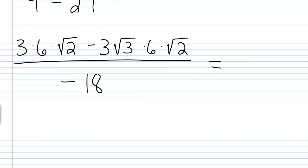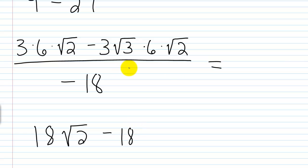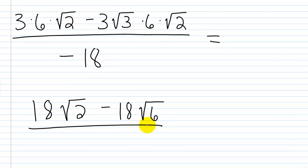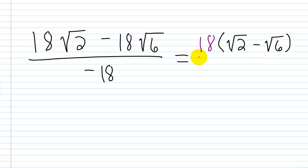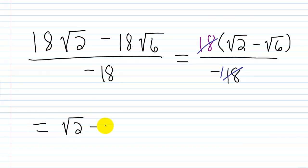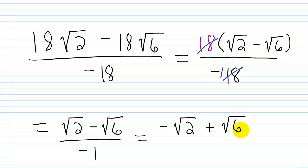Continuing to simplify: 3 times 6 is 18, giving 18 times square root of 2, then minus 3 times 6 which is 18 times square root of 6, all over negative 18. I can factor out an 18 in the numerator, giving 18 times the quantity square root of 2 minus square root of 6, over negative 18. Canceling the 18s leaves negative 1 in the denominator, so the result is square root of 2 minus square root of 6 over negative 1 — or equivalently, negative square root of 2 plus square root of 6, which is the final answer.